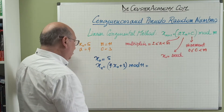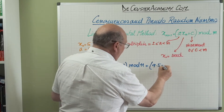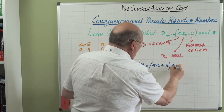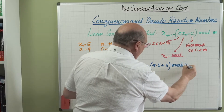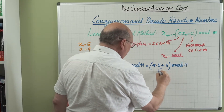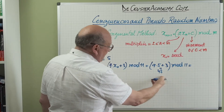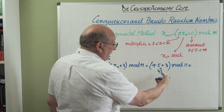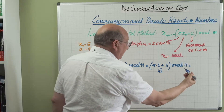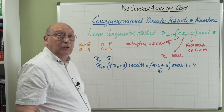Calculating x_1: (9 × 5 + 3) modulus 11 = 48 modulus 11. Since 44 = 4 × 11, the remainder is 4. So x_1 = 4.